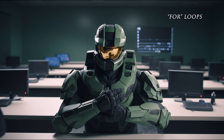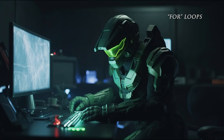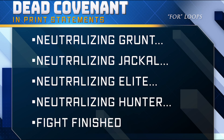Here's how you command a for loop in Python, Spartan: 'for variable in sequence, execute this code.' Imagine you've got a list of covenant species you need to neutralize — a for loop makes it easy to go through them one by one. covenant_species equals ['grunt', 'jackal', 'elite', 'hunter']. For enemy in covenant_species: print('neutralizing', enemy). This is the result of the code — a whole bunch of dead covenant.